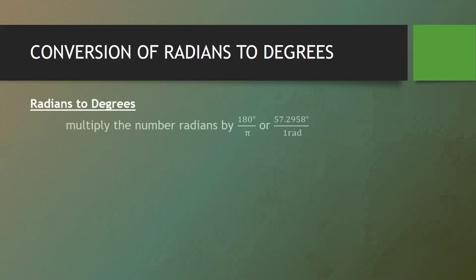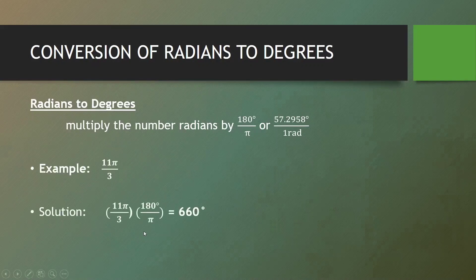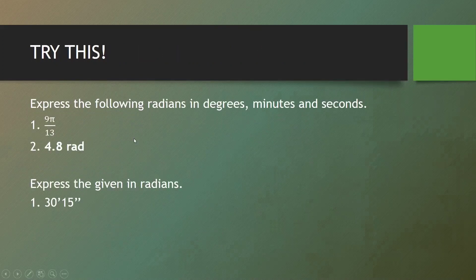To convert radians to degrees, multiply by 180 degrees over π, or by 57.2958 degrees per radian. For example, 11π/3 radians multiplied by 180/π gives 660 degrees. Try expressing the given radians in degrees, minutes, and seconds on your own.